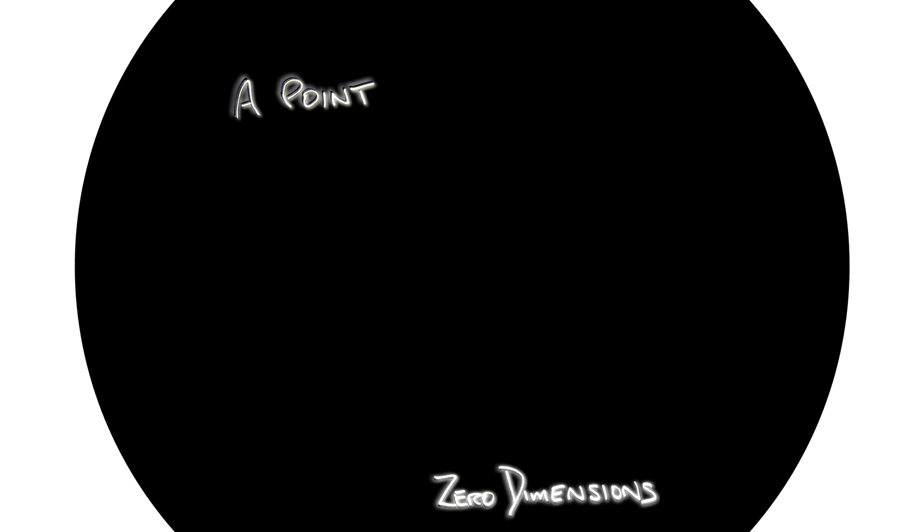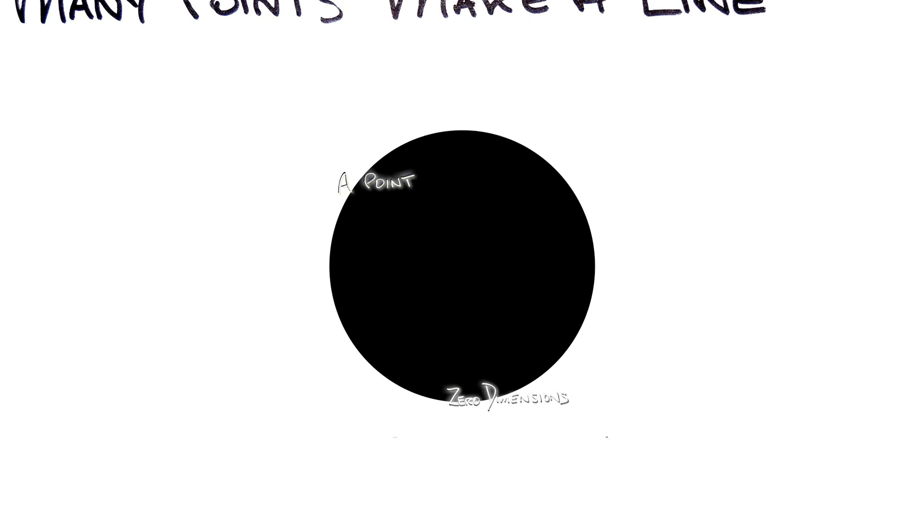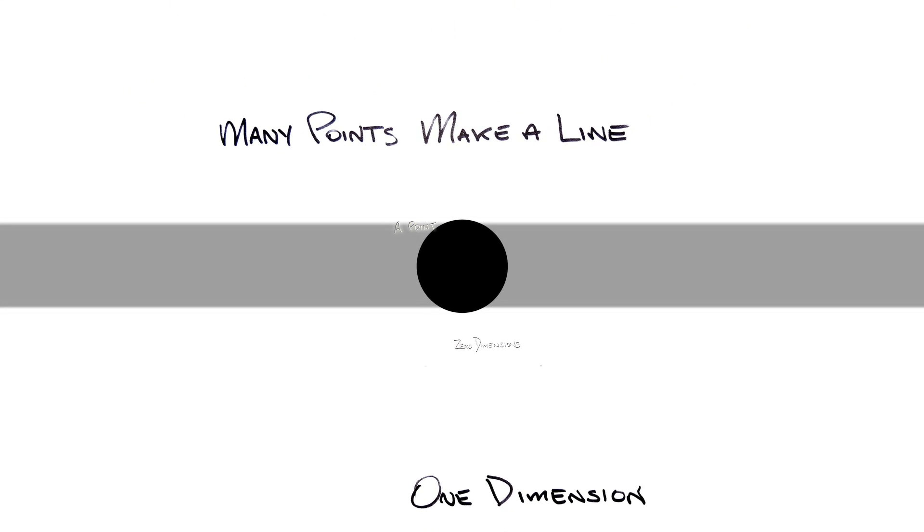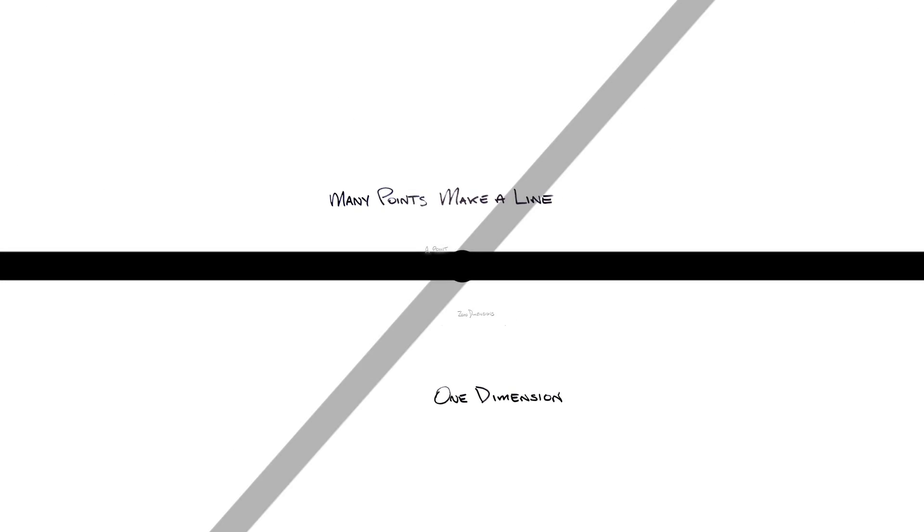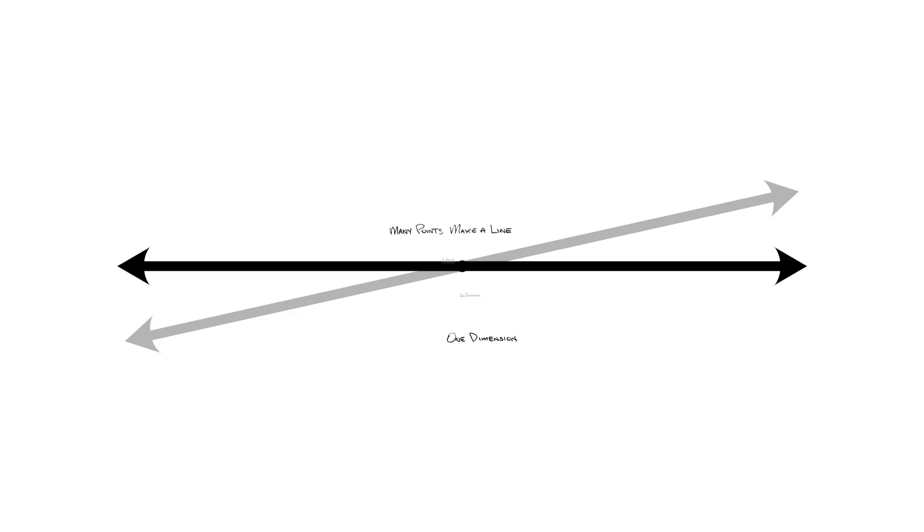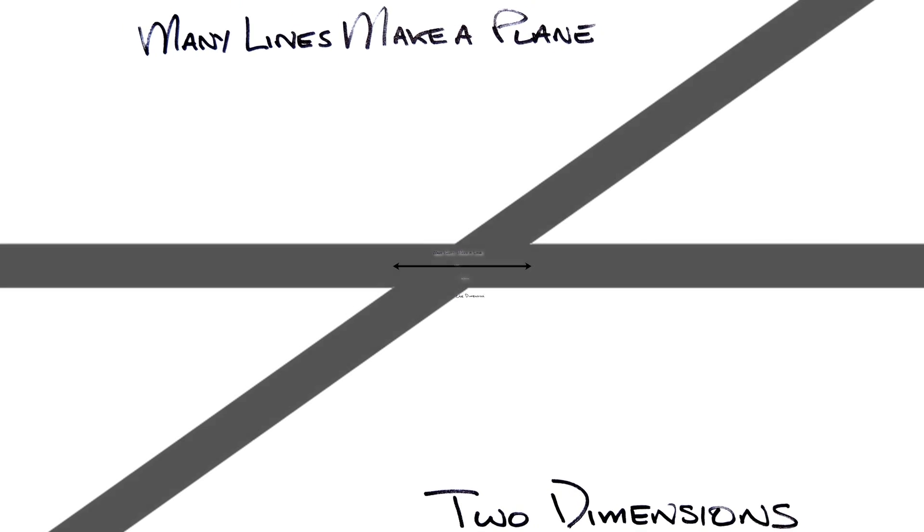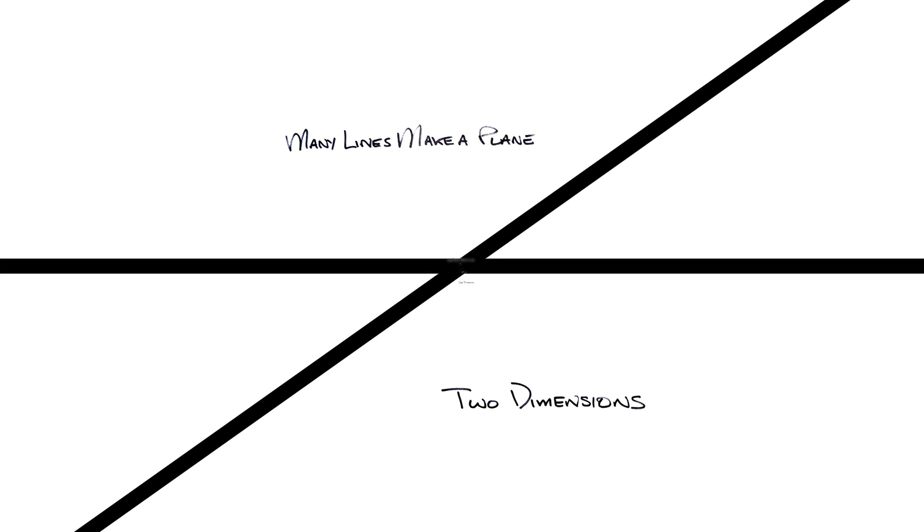Start with a point, zero dimensions. Many points make a line, one dimension. Do any one of these 1D lines pass through every possible point? No, other lines can be used to create a plane, in two dimensions.